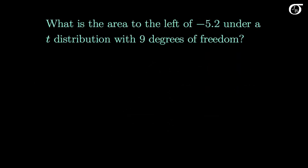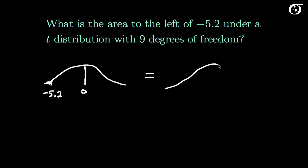What is the area to the left of minus 5.2 under a t-distribution with 9 degrees of freedom? Drawing in a t-distribution by hand: here's our distribution, 0 is right in the middle, and minus 5.2 is out in the left tail. We're looking for the area to the left of that value. Recall the t-table does not give negative values of t, so we use the symmetry about 0 argument and recognize that the area to the left of minus 5.2 equals the area to the right of 5.2.